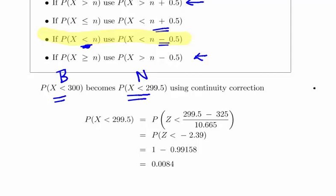Using the normal distribution, we found the normal mean and standard deviation to be 325 and 10.665. I skipped over that in this video for brevity—I dealt with it in my previous video. But essentially, what we're doing is calculating a z-score. The z-score works out to be minus 2.39.